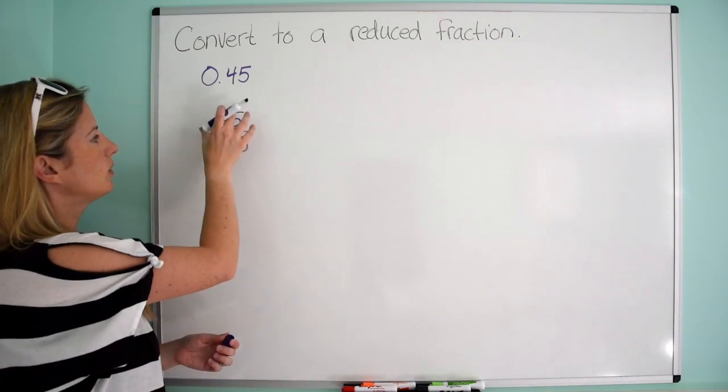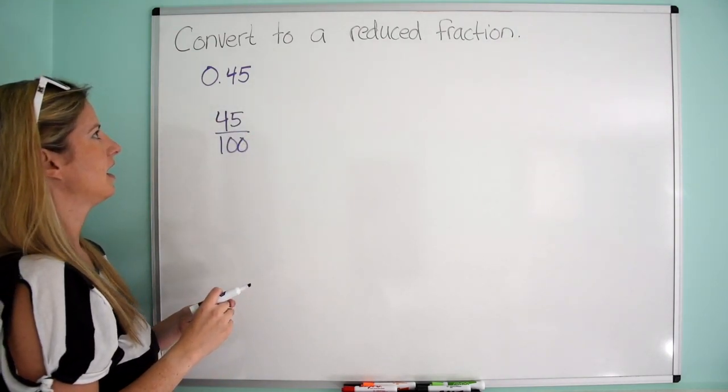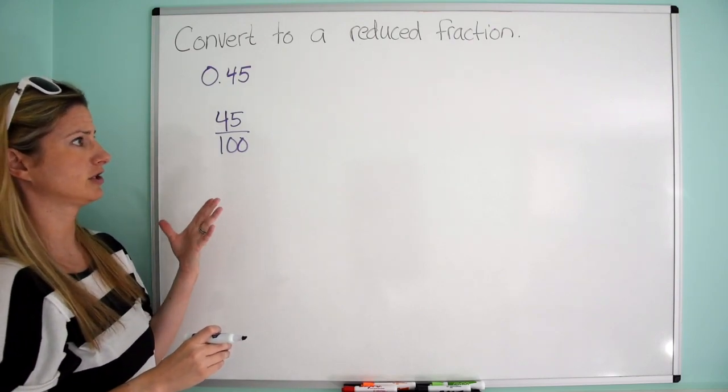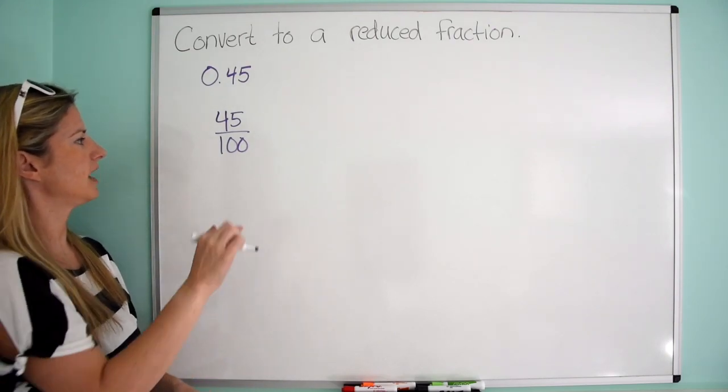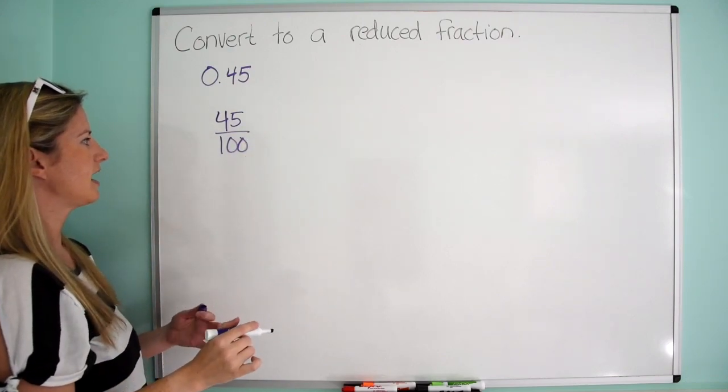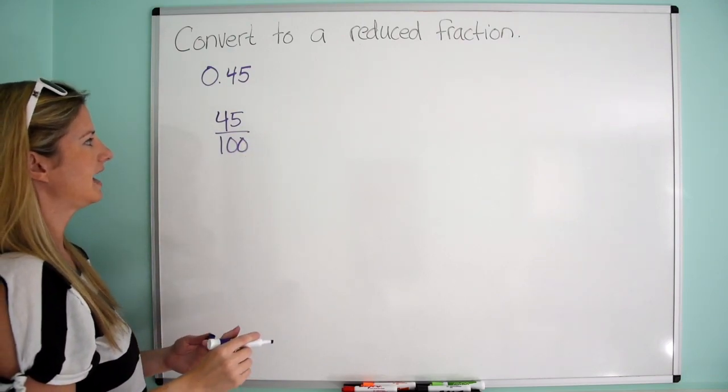And then we need to reduce this. We need to put this in, we need to reduce this fraction, simplify this fraction, whatever word you want to use to describe that. So what we're going to do is we're going to see what can we divide out. I know they're both divisible by 5.